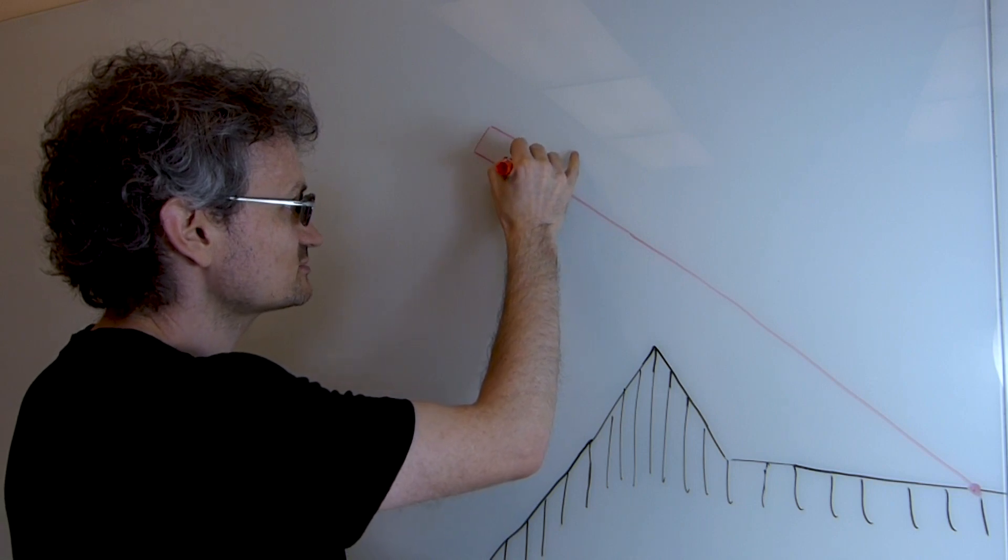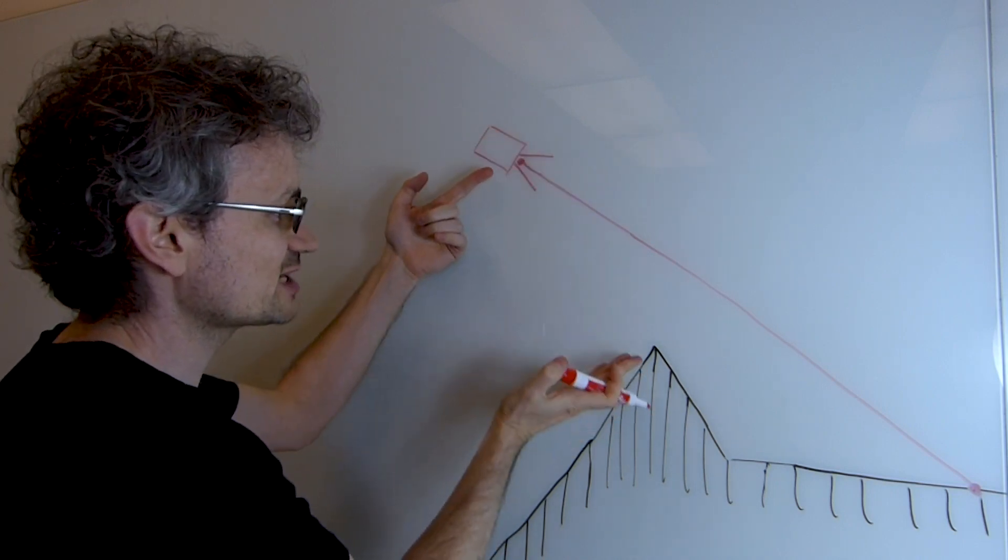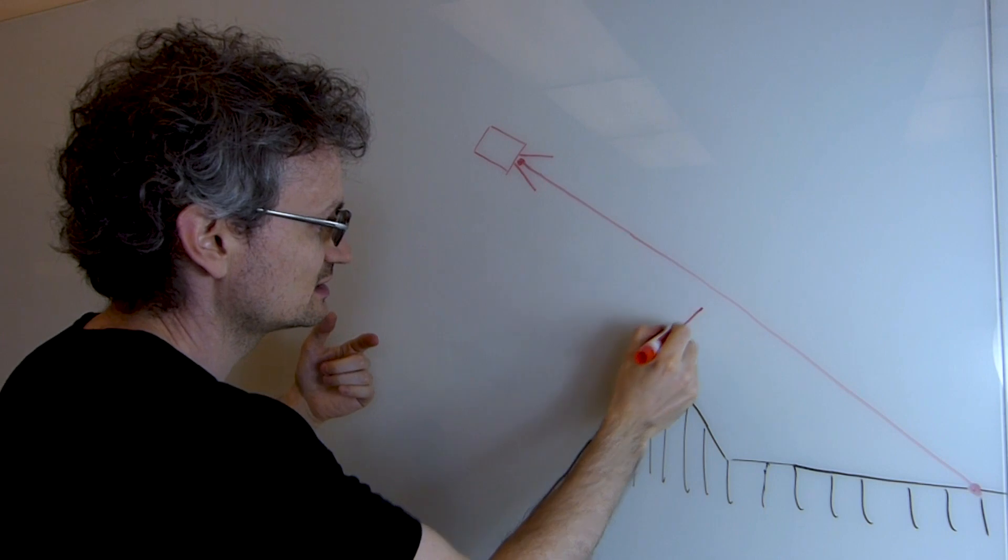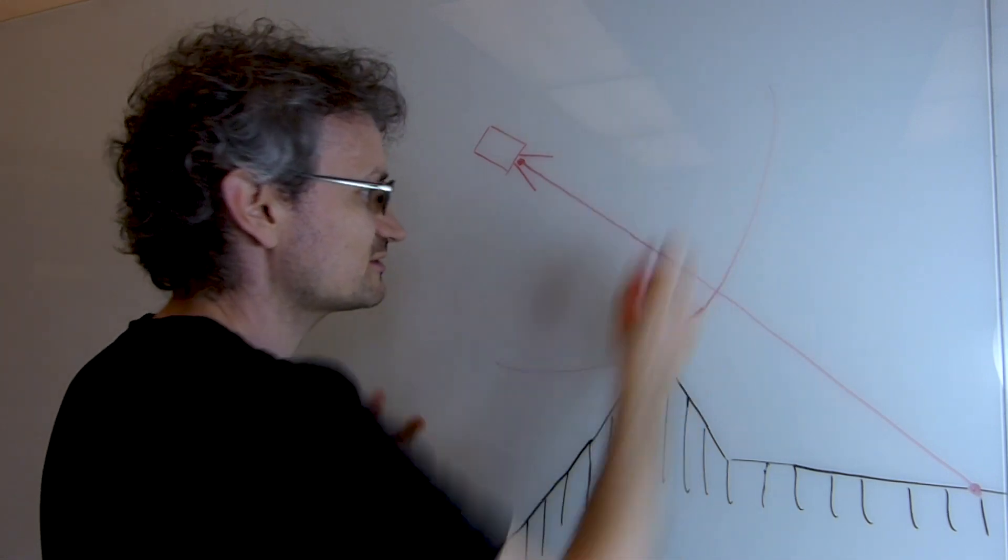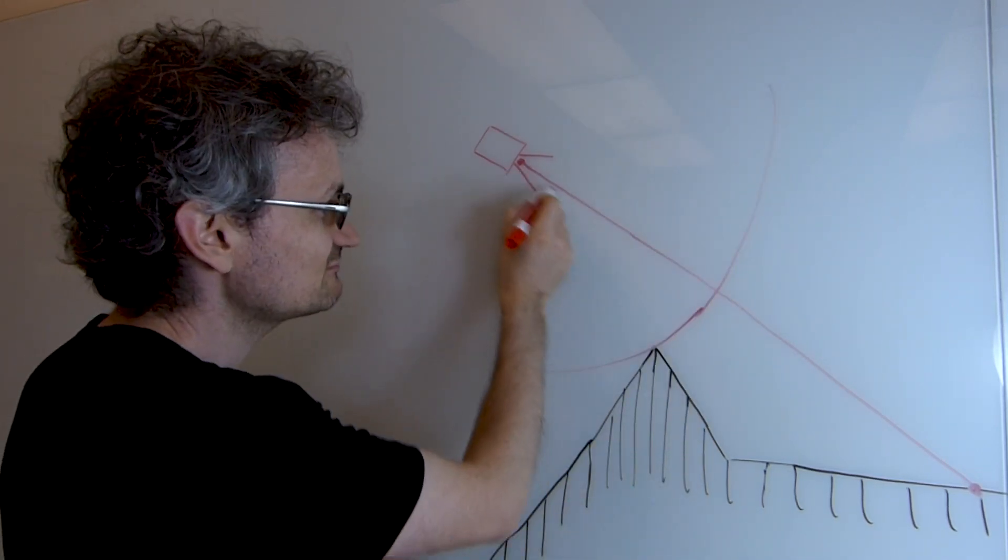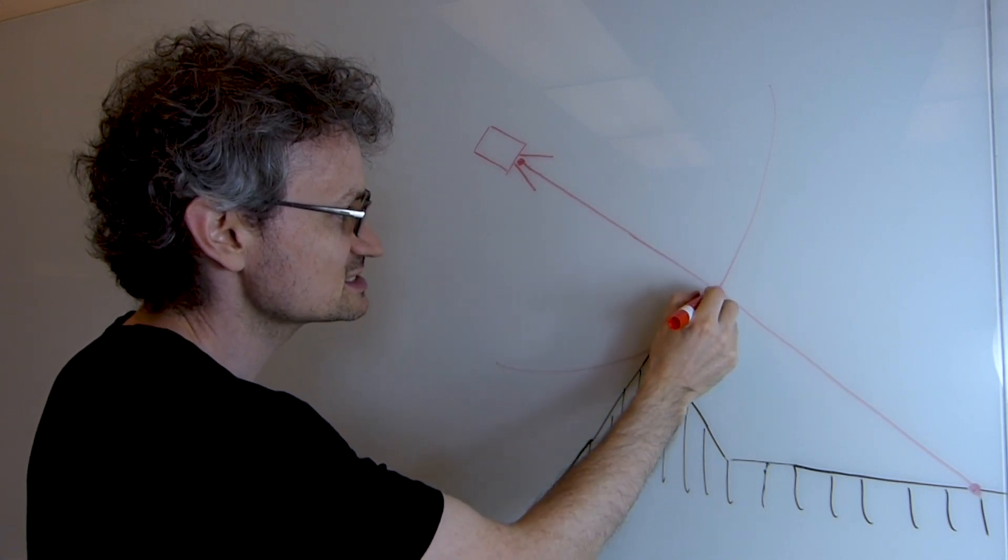We start at the virtual camera and we ask the signed distance function how far away from the objects in the world are we. It tells us we are this far away from any object in the world, which means we can safely march along the ray to this point.